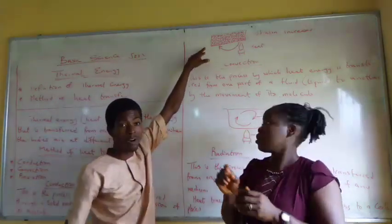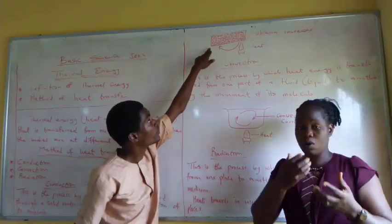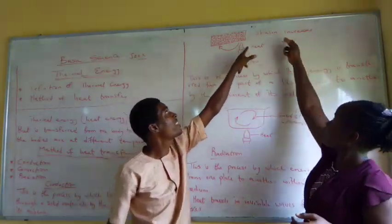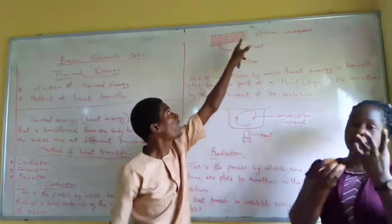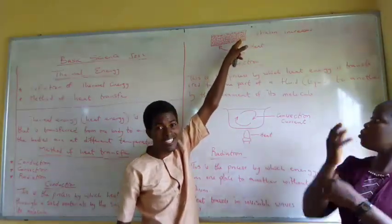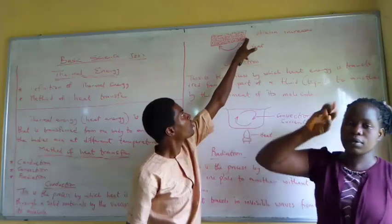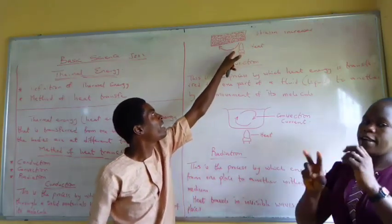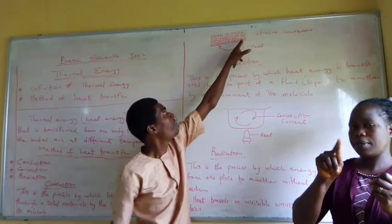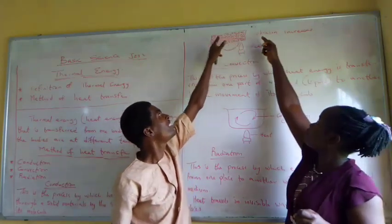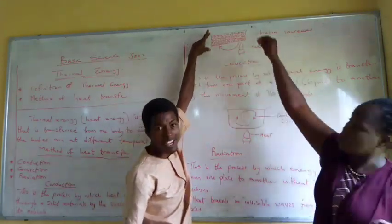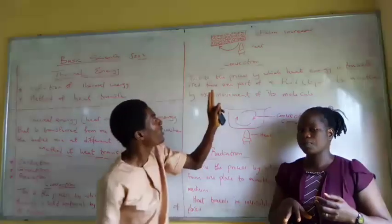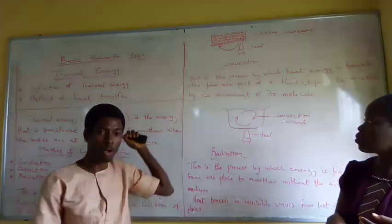Looking at the diagram on the board, you can see this is the solid material. Look at where the heat has been introduced — look at the particles, the molecules inside. Vibration continues to take place. Look at the direction of the arrow — the vibration continues until this place becomes so hot that you can no longer hold it. That's about conduction.